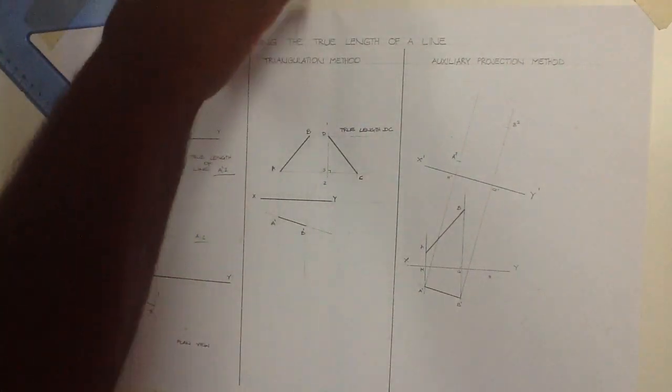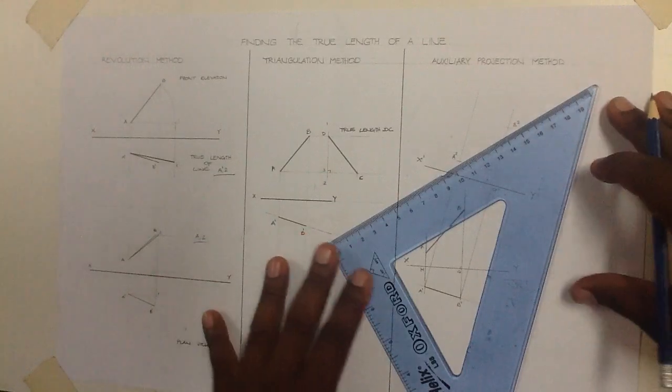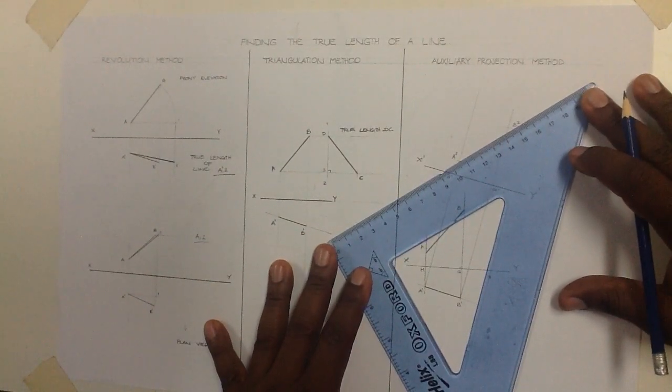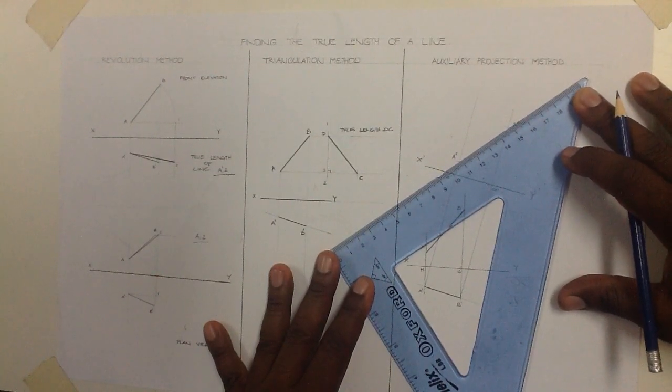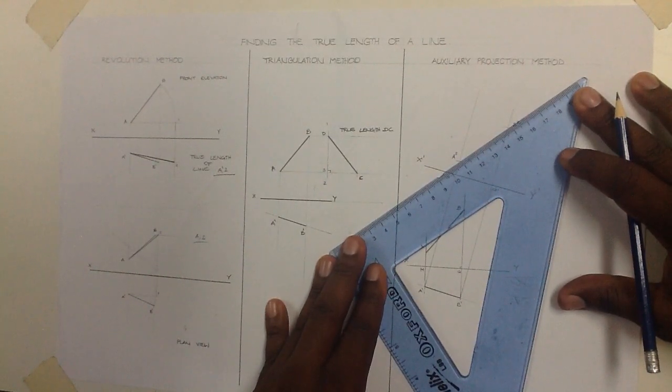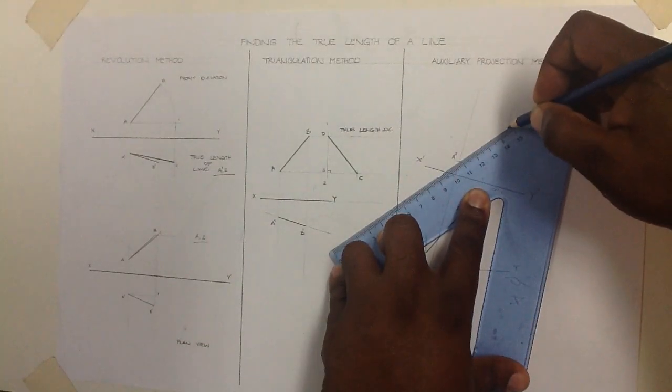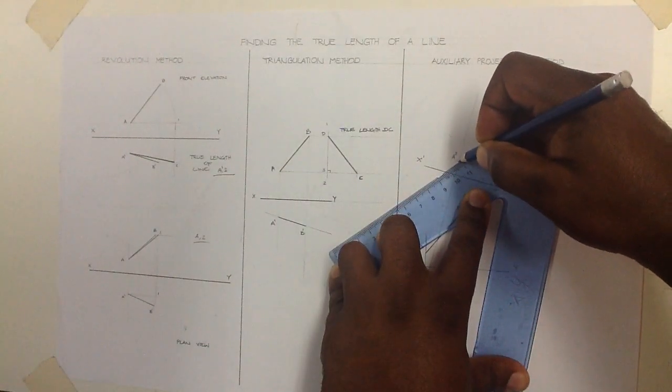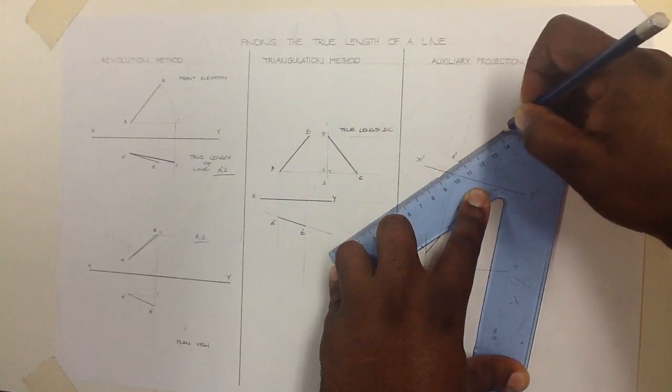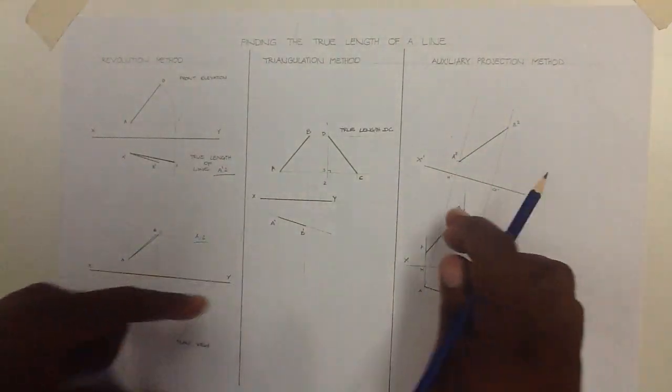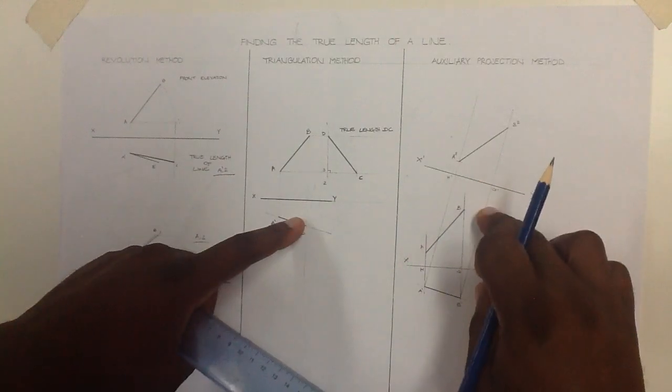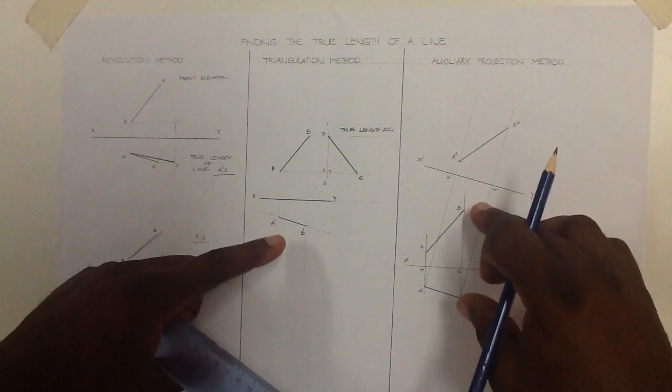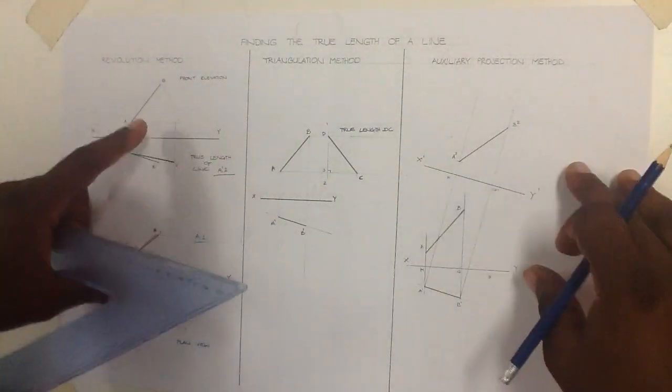Then as easy as that, our final step, we're going to join point A2 with point B2. And that should be the true length of our javelin stick gathered from the shadows cast on the horizontal plane, our plan view, and also our vertical plane, our front elevation, as you can see here.